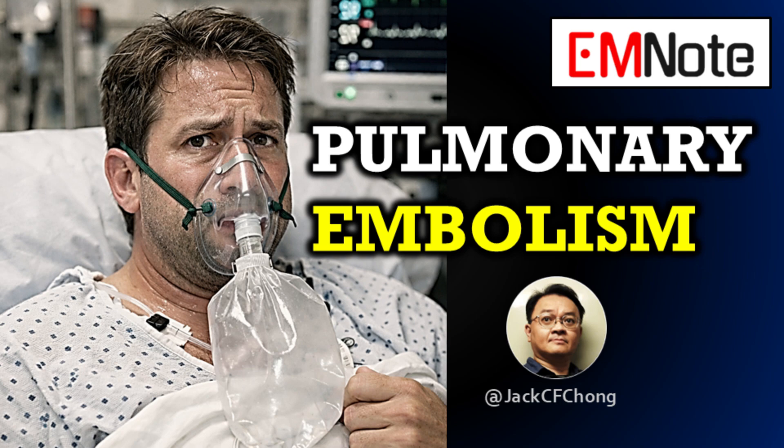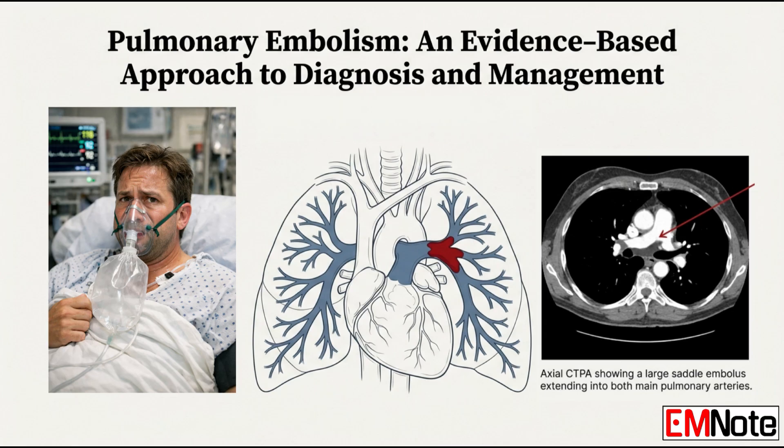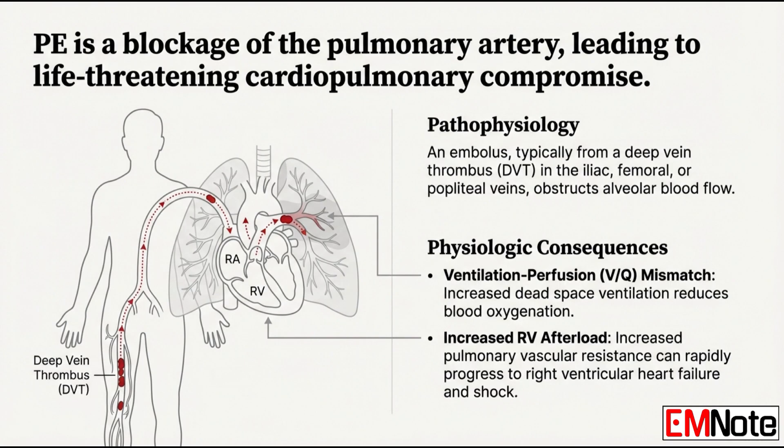Welcome back. Today we're running through a clinical flow where every second counts, assessing a suspected pulmonary embolism. It's one of those diagnoses you just can't afford to miss. We're talking about a blockage in the pulmonary artery, and that blockage is usually a clot that's traveled from somewhere else. Most of the time it's a thrombus that breaks off from the deep veins in the leg — the iliac, femoral, or popliteal veins. So when that clot lodges in the lungs, what's the immediate physiological crisis? Why does the body react so violently?